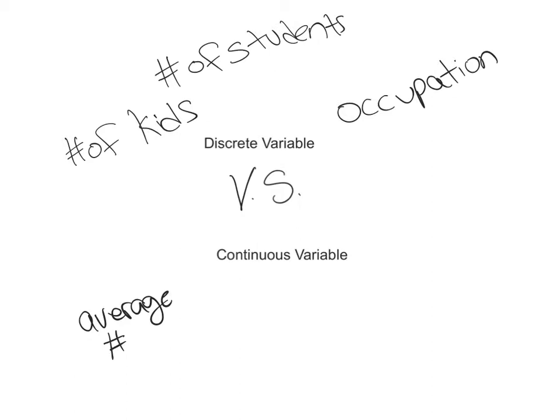Other examples of continuous variables could be height. I am 5'0", but I could be 5'1", or 5'1.5", or 5'1.25" — a continuous variable keeps going to an infinite number of possible values. Height, weight, and any kind of averages are going to be more continuous variables.